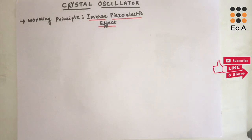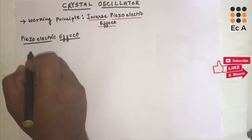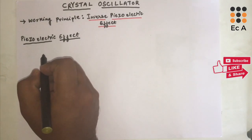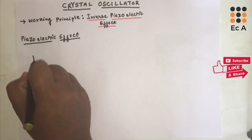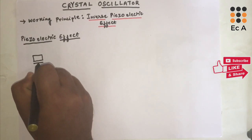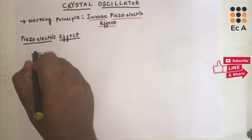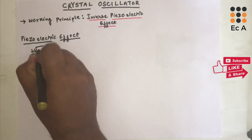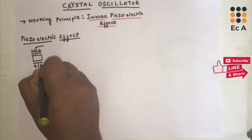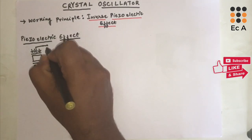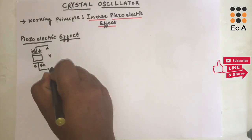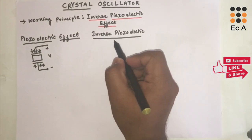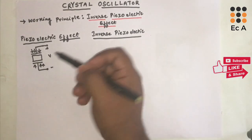Many naturally available crystals exhibit piezoelectric effect. Piezoelectric effect is an electromechanical phenomenon. If we take any piezoelectric material and apply a certain amount of pressure on it, it will produce voltage across its terminals. This effect is known as piezoelectric effect.